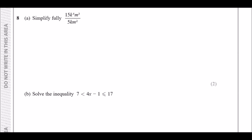Number 8: simplify fully this fraction. These questions are nice and simple, and the trick is to look up and down and cancel common terms. Let's take it step by step. Working with 15 over 5: 15 divided by 5 is just 3, so put 3 here.